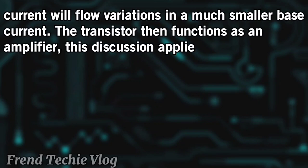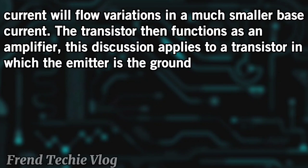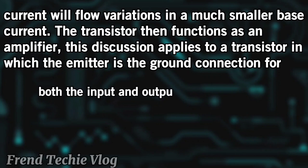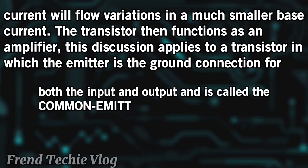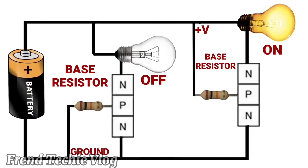The transistor then functions as an amplifier. This discussion applies to a transistor in which the emitter is the ground connection for both the input and output — this is called the common emitter circuit. This is how the common emitter circuit is used in real circuits.